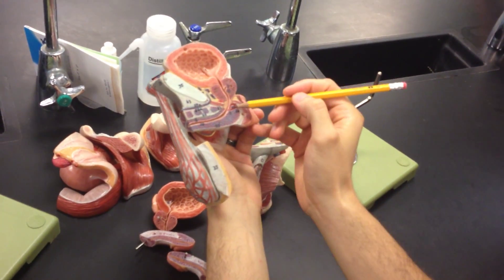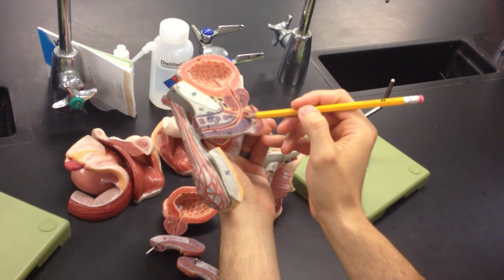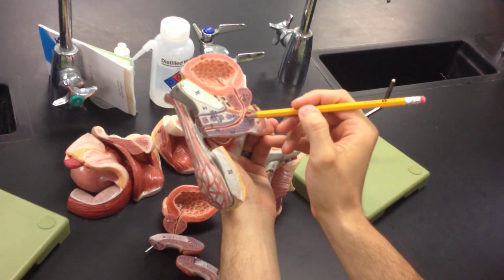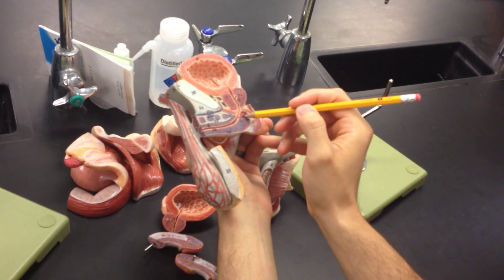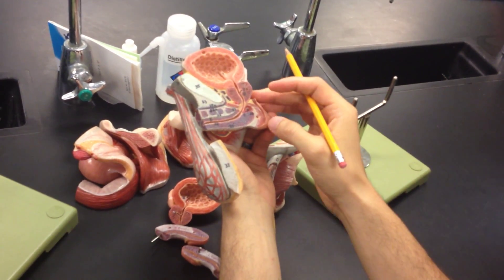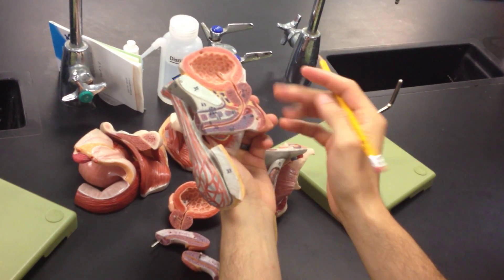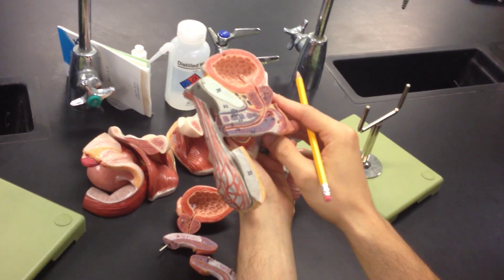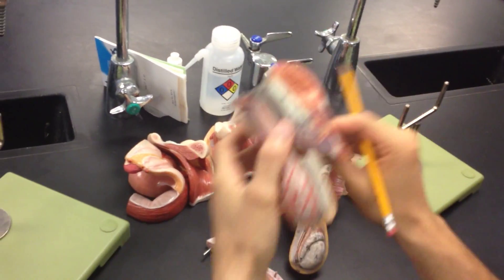See that little gland there, 21? That's bulbourethral. So just think bulb and attach it to the urethra. All right, so I believe that's everything. Any questions? All right, you're good.